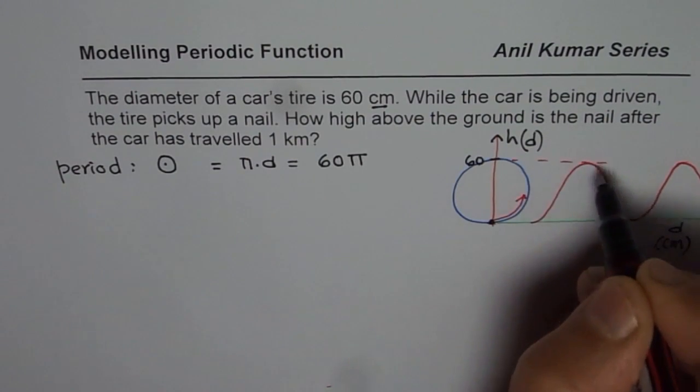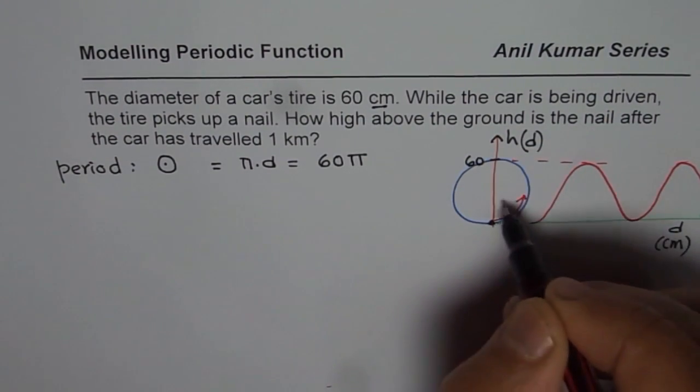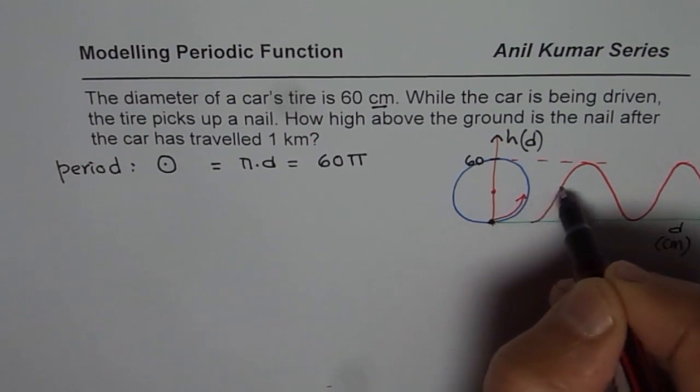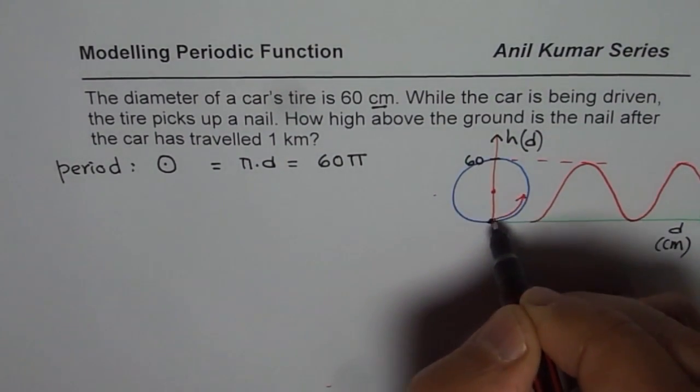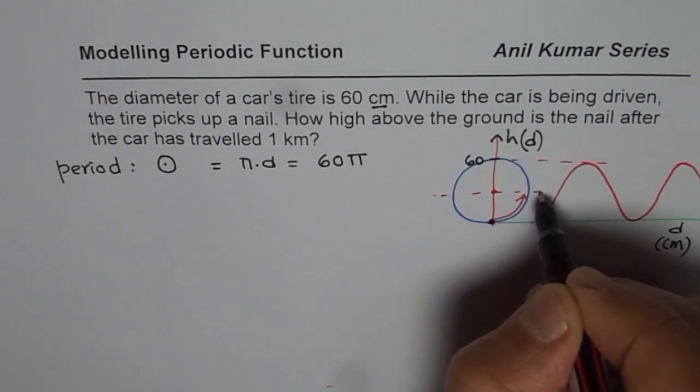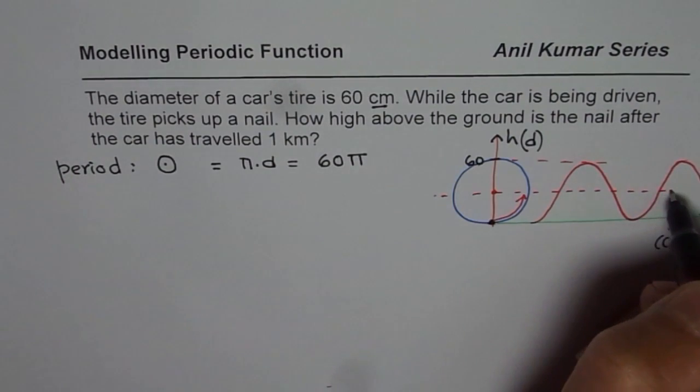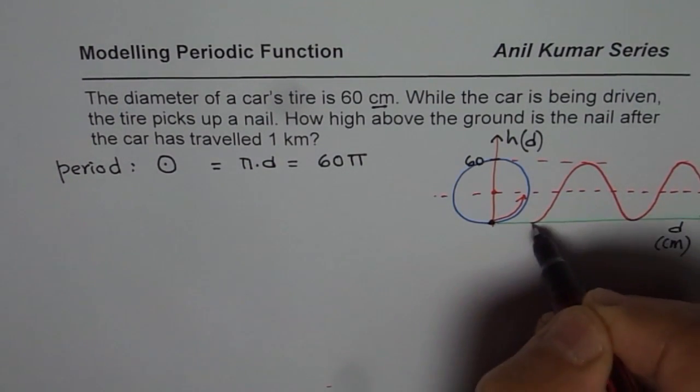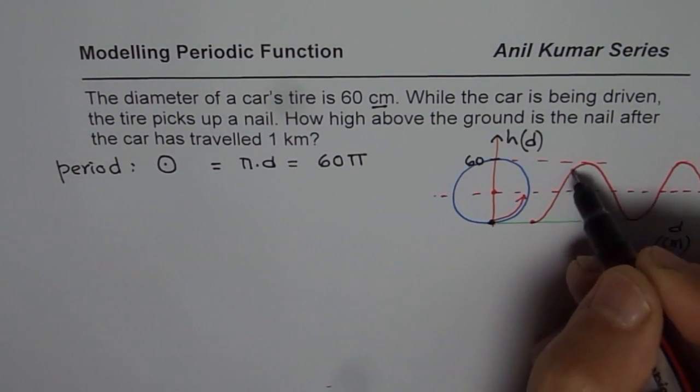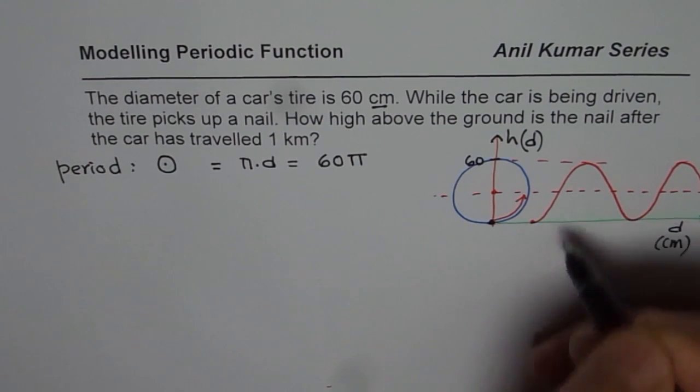Where the maximum is going to be 60. And axis will be right in the center of 60 and 0. That is how the situation is. That is the cosine graph starting with the minimum.